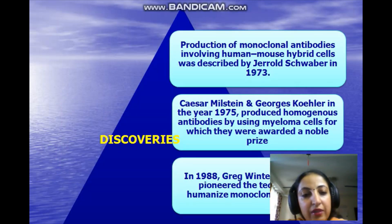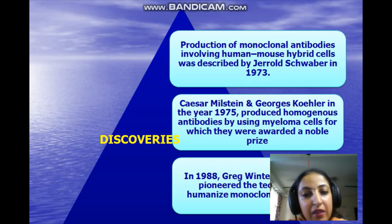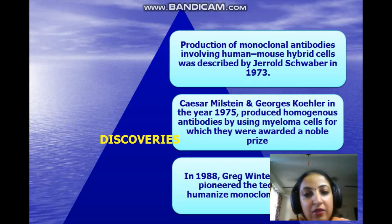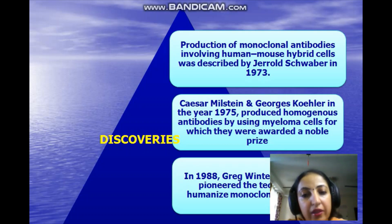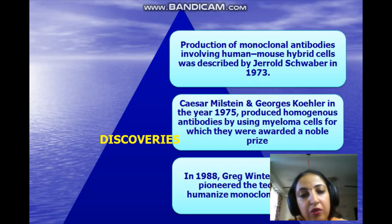Regarding discoveries related to monoclonal antibodies, Cesar Milstein and George Kohler in the year 1975 are the main people who produced these monoclonal antibodies using myeloma cells. That sounds very strange because myeloma means cancerous cells, but yes, they used myeloma cells for producing monoclonal antibodies, and for this they were awarded a Nobel Prize. There are other scientists also involved in monoclonal antibodies.